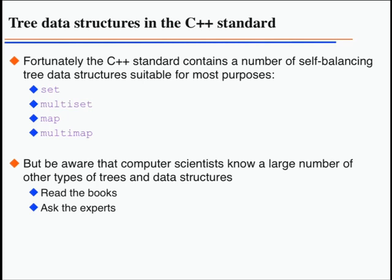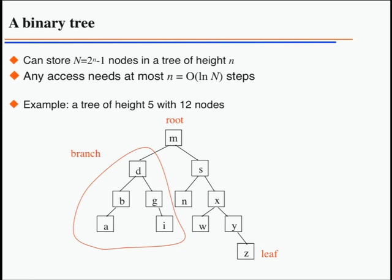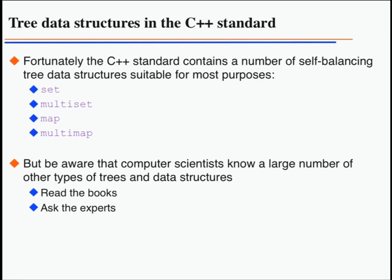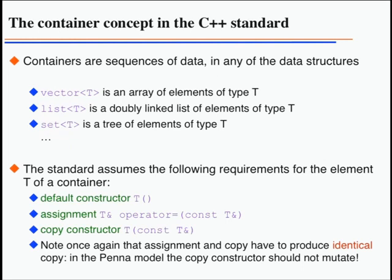There are four different tree types in the standard. The set is a tree of sorted elements where each element appears only once. The multiset allows multiple copies of the same element. The map data structure is like a phone book — there's a key (the name) and a value (the phone number). The multimap allows storing more than one value per key. We'll get to the details later.